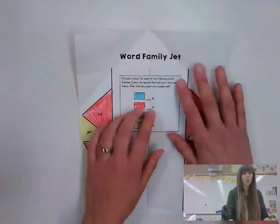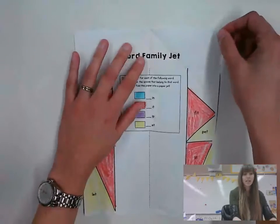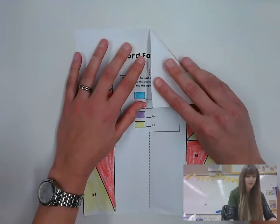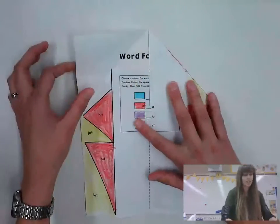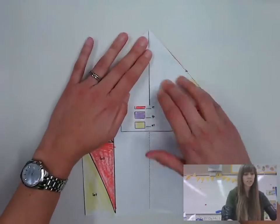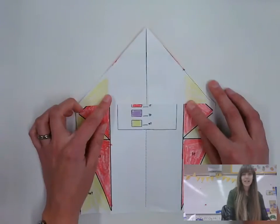Then you're going to open it up. Then you're going to take this corner and you're going to fold it into the middle and rub your finger on that fold. Then you're going to take the other side, fold it into the middle, just like that.